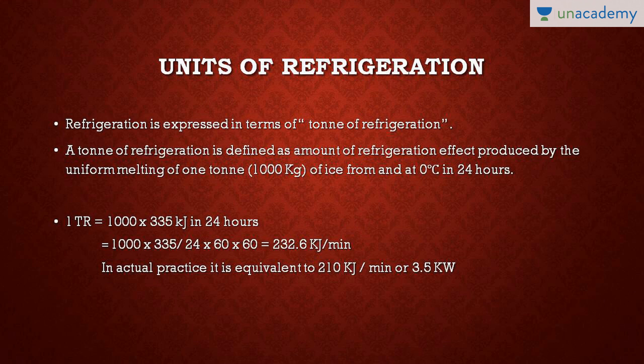So one TR equals 232.6 kJ per minute, but accounting for losses, one TR is equivalent to 210 kJ per minute. One TR means: how much heat you have to extract from 1000 kg of water to convert it into ice in 24 hours at zero degrees Celsius — or vice versa. Keep this value in mind because in numericals you will use it directly. In GATE and Engineering Services Examination, one TR has been asked many times. One TR equals 210 kJ per minute or 3.5 kW.